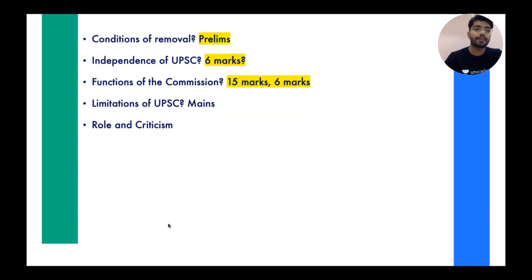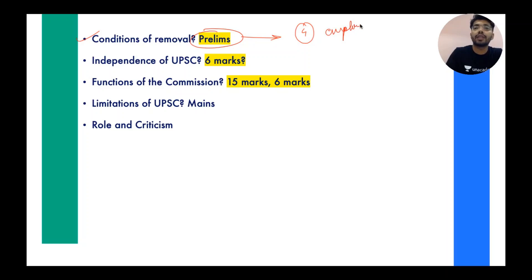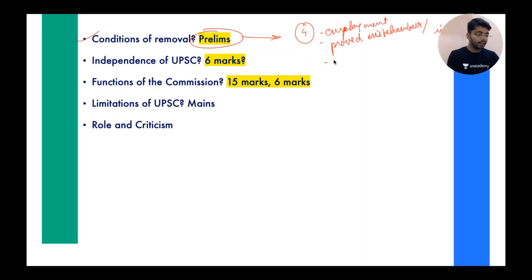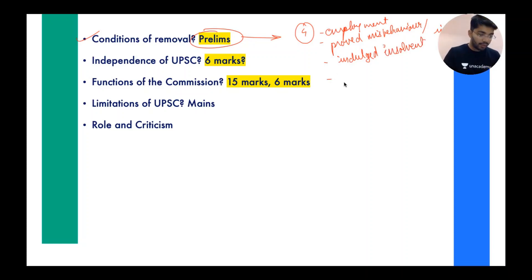This removal process you need to look at carefully. Then come the conditions of removal — prelims can ask questions on this. There are almost four conditions: if a member is involved in outside employment; proved misbehavior, which is always mentioned in the Constitution; incapacity, under which the President can remove a UPSC member; and one more condition — being declared insolvent. There is also infirmity of mind as a condition for removal.